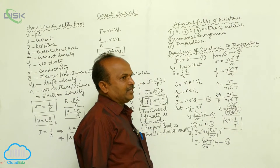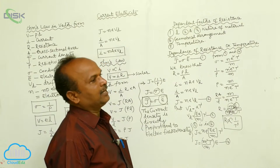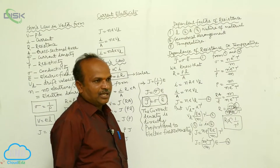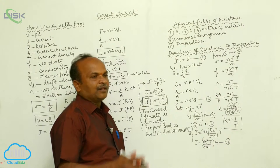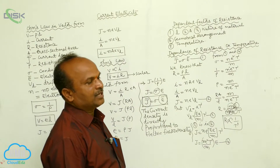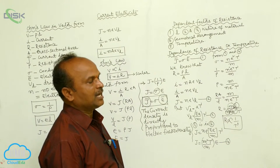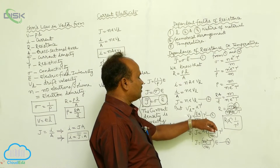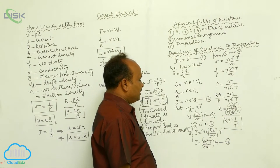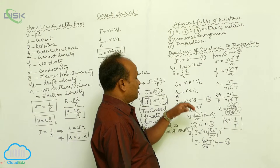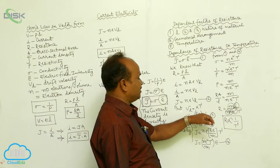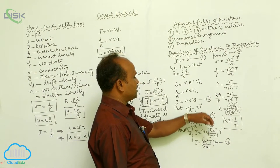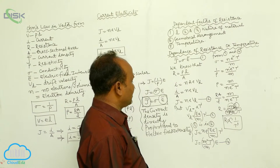From F equals m a, we get m a equals e q. So acceleration a equals e q by m. Substituting the charge of the electron e, drift speed equals capital E into small e by m into tau. This third equation is now substituted into the second equation.